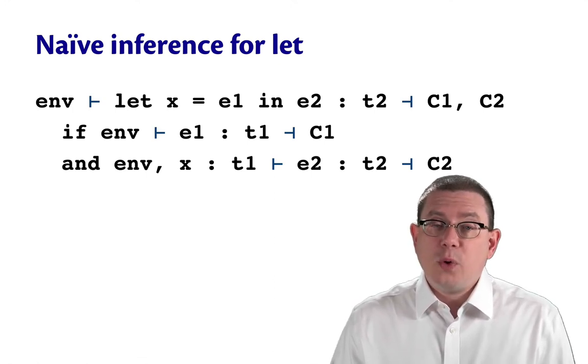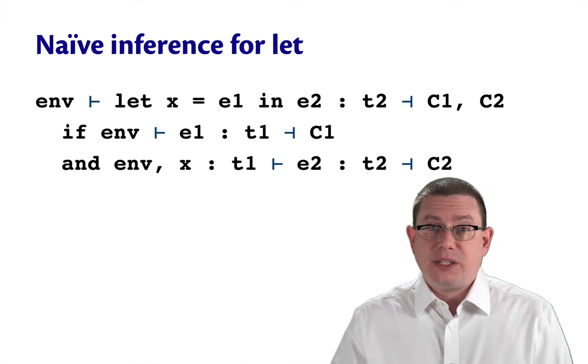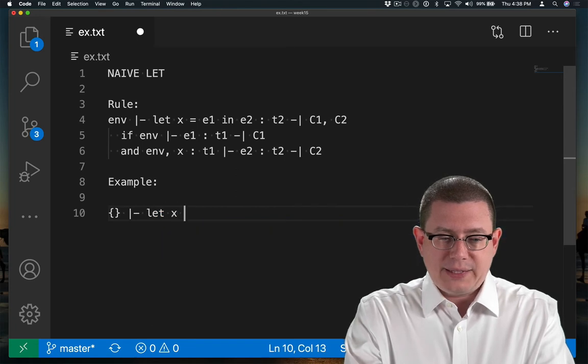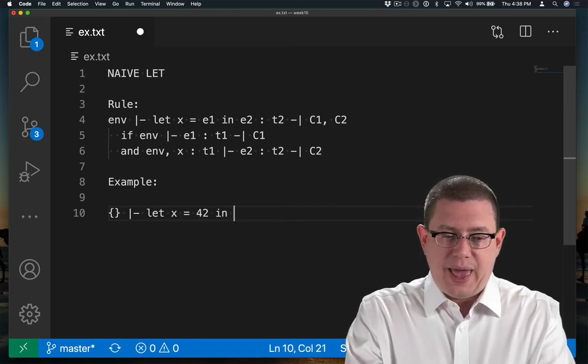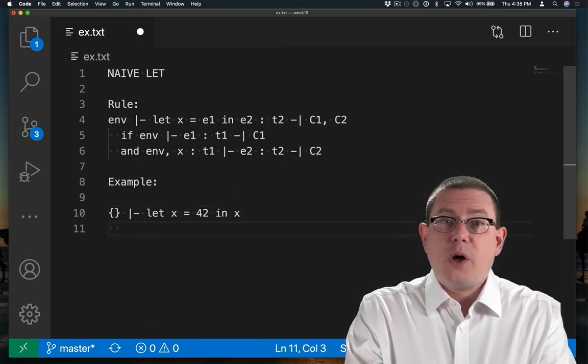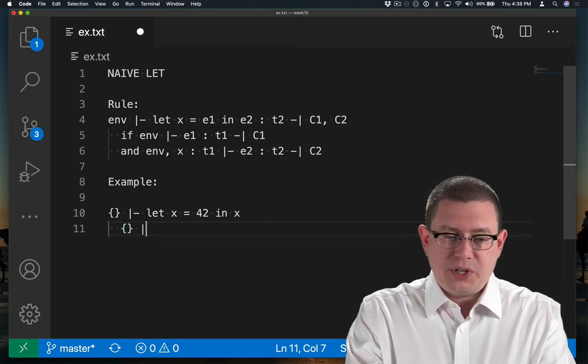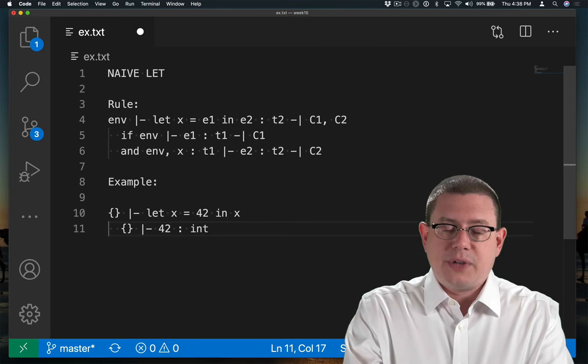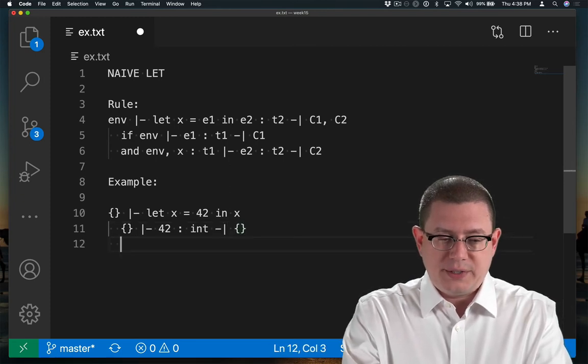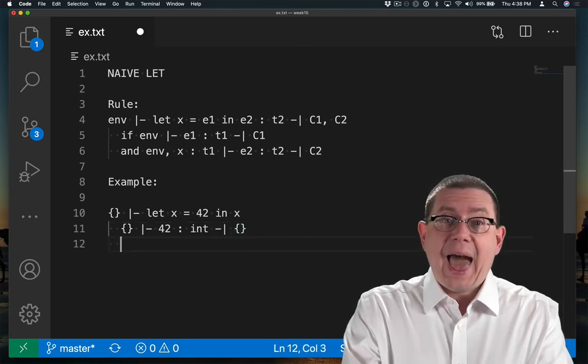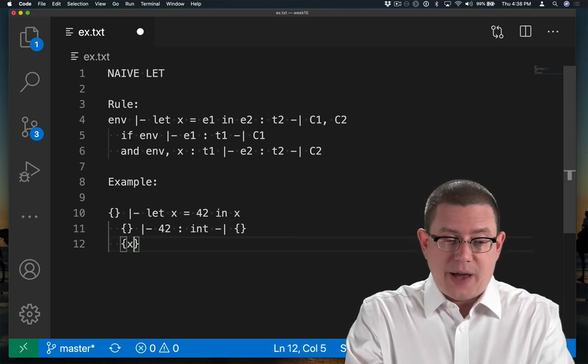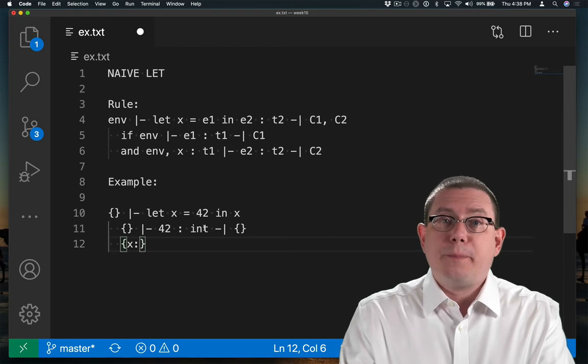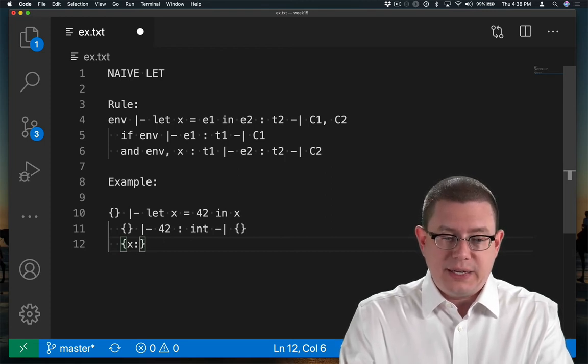This is a reasonable rule and it gets many cases right. For example, suppose we wanted to infer the type of let x equal 42 in x. Well, we would go ahead and infer the type of the binding expression 42. That's a constant of type int, generates no constraints. We would then add the name x to the static environment under the type that we had inferred for the binding expression. So that's int here.